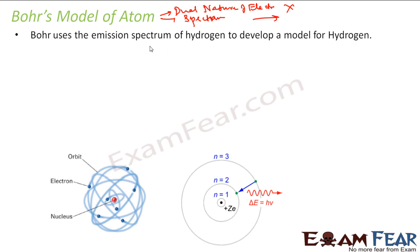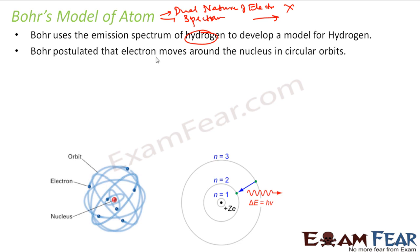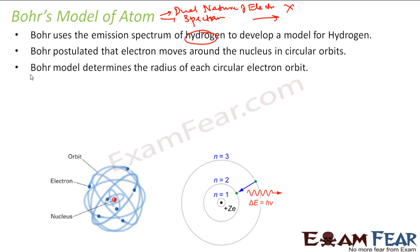He uses the emission spectrum of hydrogen — that was the base for him to develop the model for hydrogen. He postulated that electrons move around the nucleus in circular orbits. For example, this is a nucleus and the electron moves around this nucleus in a circular orbit. They are fixed circular orbits. Bohr was also able to determine the radius of each electron in the orbit.